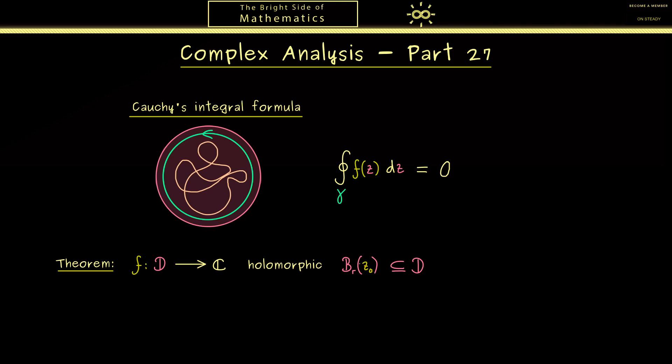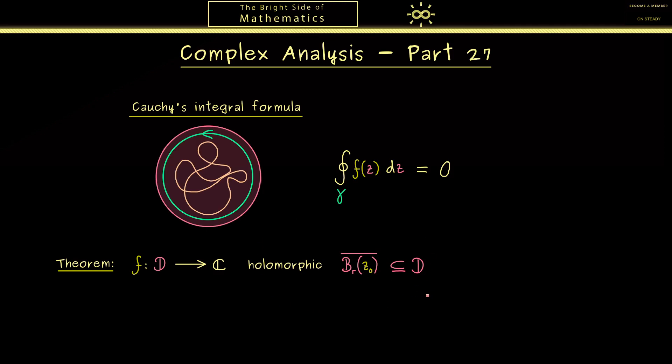Okay, now the disk should be a subset of D, but we also want more. We want that the closure lies in D. This simply means that the circle here lies also in the domain D. In other words, our circle here does not lie on the boundary of D. So you see this is not a strong requirement, but we need it because we want to talk about circles.